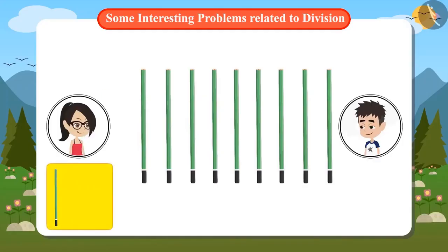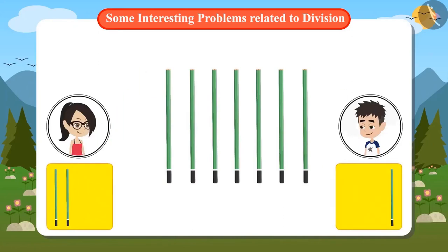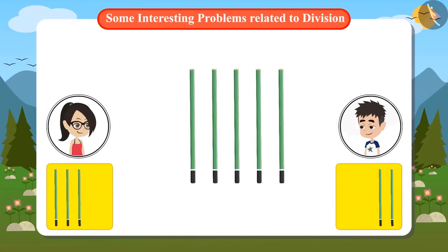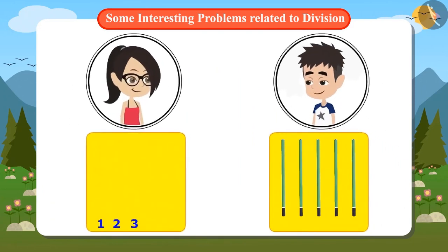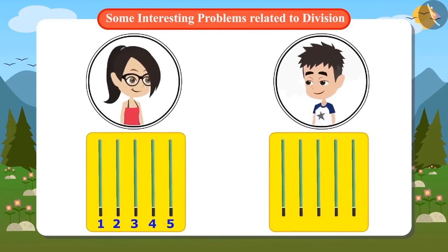First, I keep one pencil for me, then one for my brother, again one for me and then one for my brother. In this way, I keep a pencil for me and a pencil for my brother until all the pencils are divided. Now I also have five pencils and my brother also has five pencils. Vandana has divided the pencils into two equal parts.